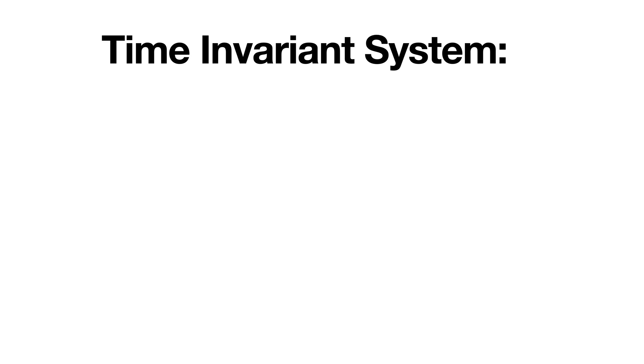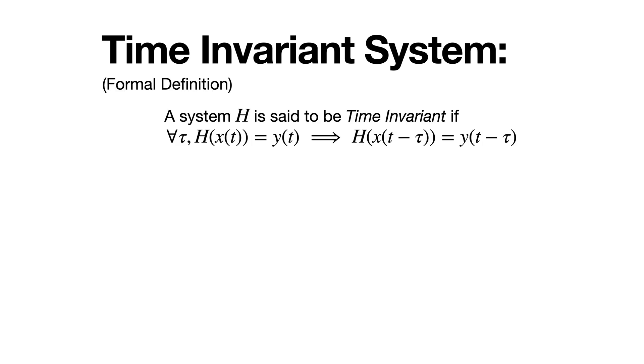We can write the definition of a time-invariant system formally and concisely by saying a system h is said to be time-invariant if for all tau h of x of t equals y of t implies that h of x of t minus tau equals y of t minus tau.